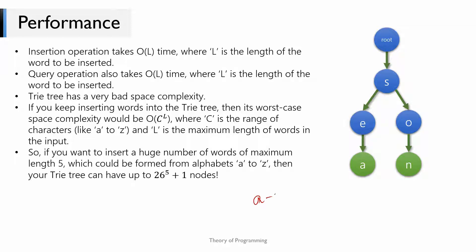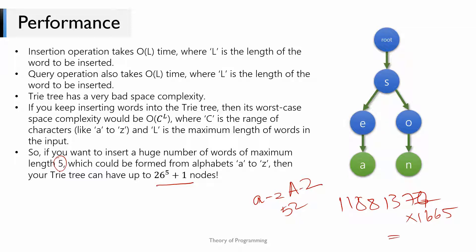The worst-case space complexity is O(C^L), where C is the range of characters (like A to Z) and L is the maximum word length. For example, if you include both lowercase and uppercase letters, the children array would have length 52. If the maximum word length is 5, the Trie tree can have up to 26^5 + 1 nodes — that's about 11,881,376 nodes. Each node has 26 pointers; at 64 bits each plus a boolean, that works out to around 2.4 GB, which is huge.